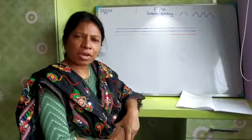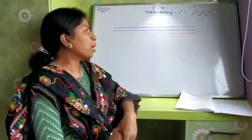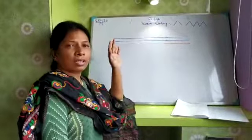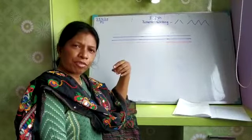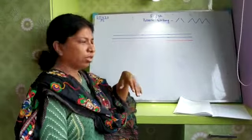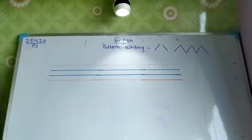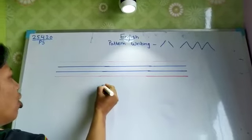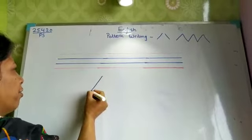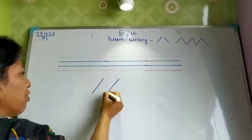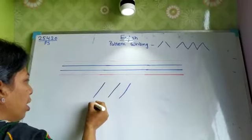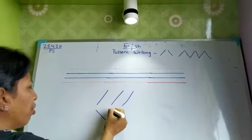Hello parents and my dear children. In my previous video we have learnt pattern writing. We are moving from left to right, and then right to left and then left to right — that is slanting lines. So our previous class was on slanting lines moving right to left, and we have done slanting lines from left to right as well.